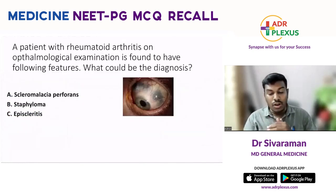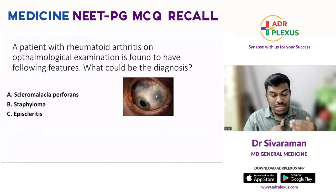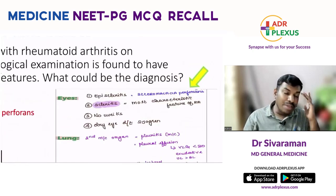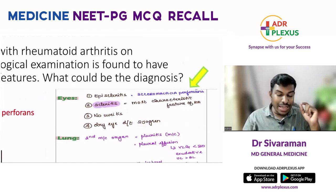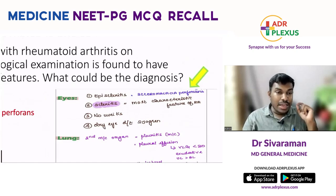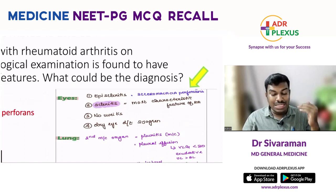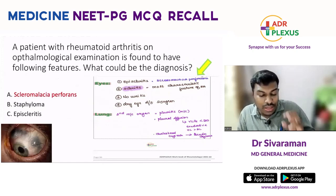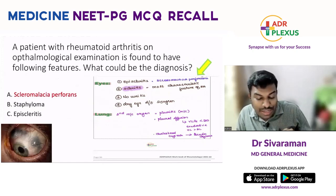Next question: a patient with rheumatoid arthritis on ophthalmological examination shows a specific picture. Options: scleromalacia perforans, staphyloma, episcleritis. In extra-articular manifestations of rheumatoid arthritis, scleritis is the most characteristic eye feature, but episcleritis is also present. Due to thinning from episcleritis, scleromalacia perforans occurs — this was shown in the picture. The answer is scleromalacia perforans, as discussed in our rheumatology session.